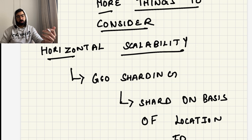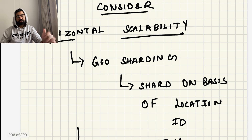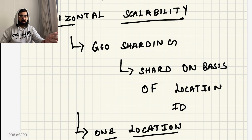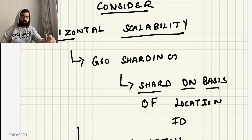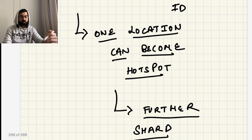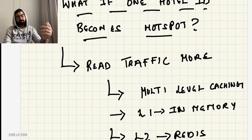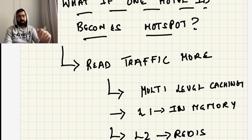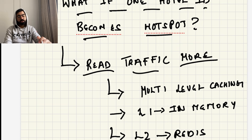For scalability, we need to make this system horizontally scalable, so we introduce sharding for the metadata database. One approach is geo-sharding — sharding on the basis of location ID. The issue here is that one location can become a hotspot — for example in winter, everyone wants to go to Shimla or Mussoorie. You can further shard that location. But what if one specific hotel goes viral on Instagram and everyone is requesting that single resort?